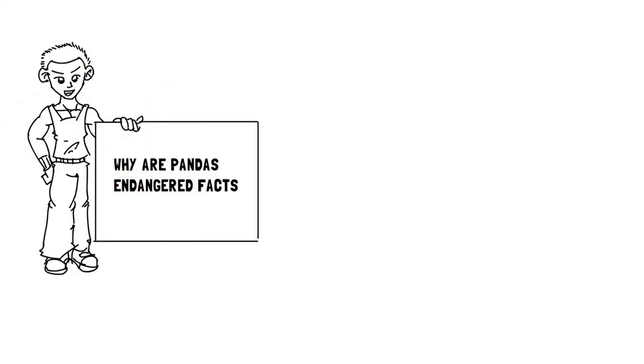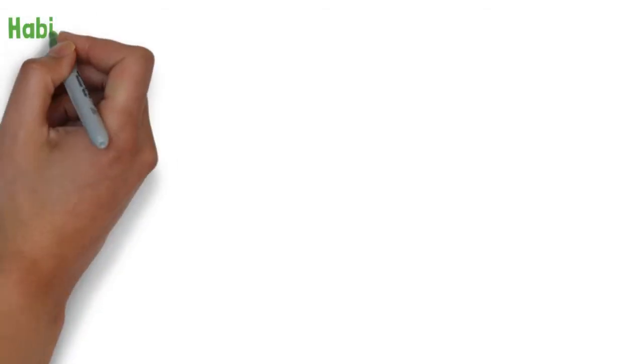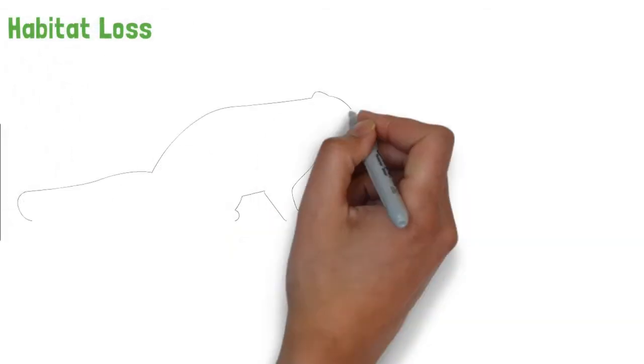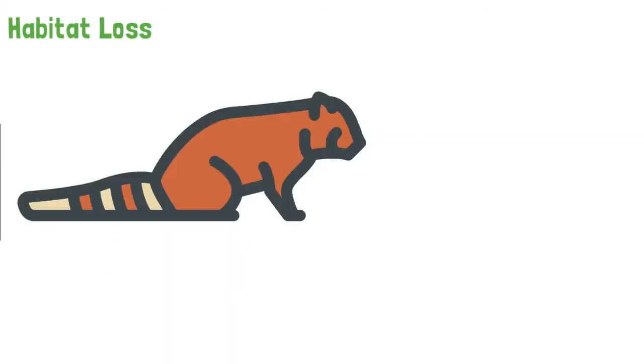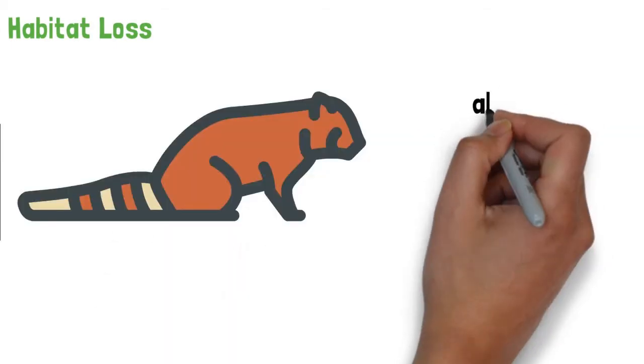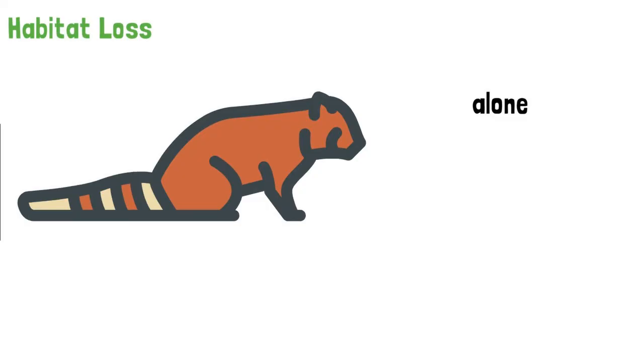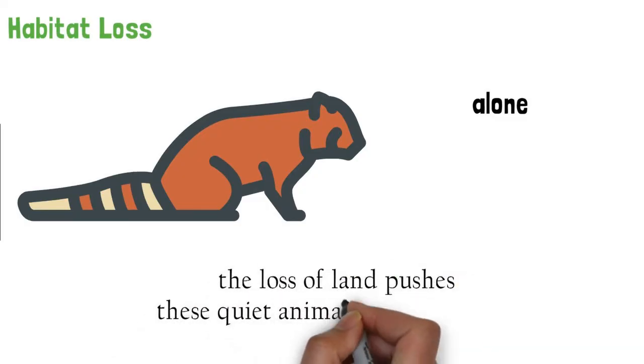Why are pandas endangered facts? Here are some important facts about why pandas used to be endangered. Habitat loss. Pandas have less and less land to live on. They also struggle to find food, as there is less land. It's important to know that pandas like to be alone. They don't spend much time with each other. Overall, the loss of land pushes these quiet animals closer together.